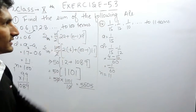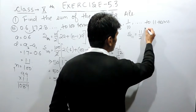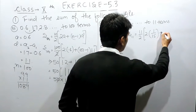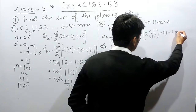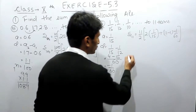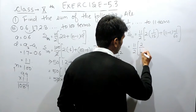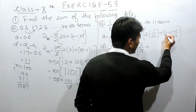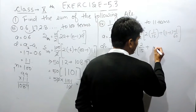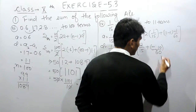We will use the same formula to find the sum of 11 terms. This will become 11 by 2, multiplied by 2 times the first term which is 1 upon 15, plus n minus 1 into d, where d is minus 1 upon 60. This becomes 2 upon 15, and 11 minus 1 is 10, and 10 multiplied by minus 1 upon 60 gives minus 10 upon 60.